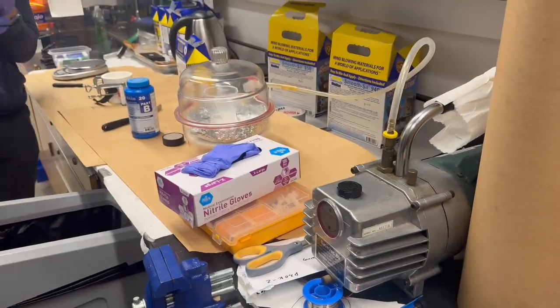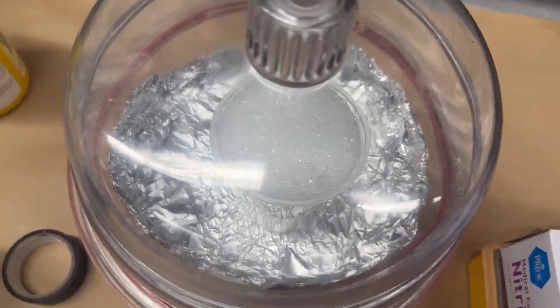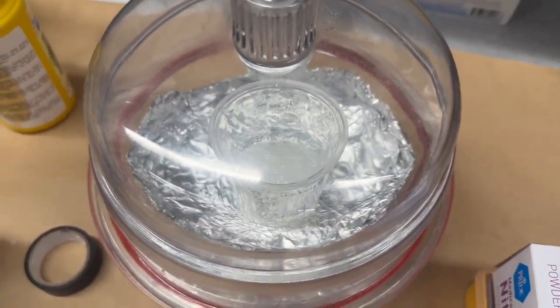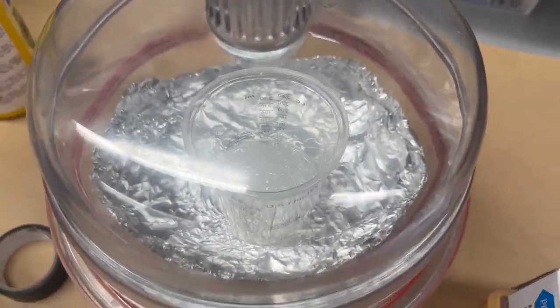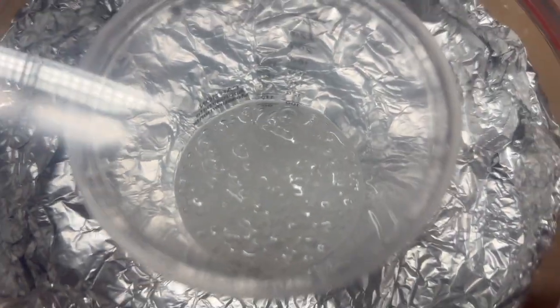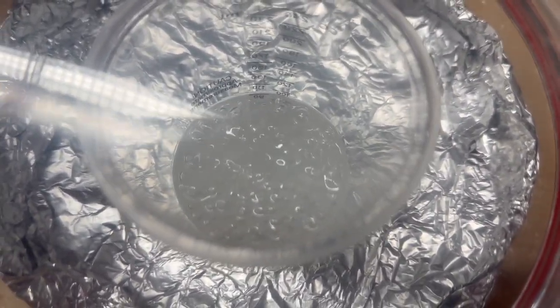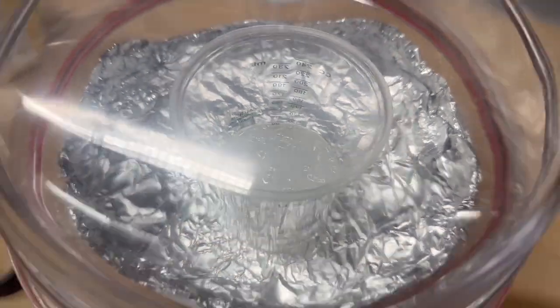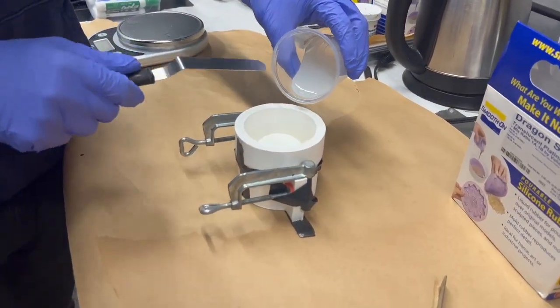After that, we put the silicone into a vacuum chamber to suck out all of the air that we introduced. And as you can see, it almost overflowed, which is why we had to do multiple batches. The cup was not big enough. We then left the silicone inside of the vacuum chamber just for a couple more minutes to let the air evacuate. We want to have as little air in the silicone as possible. We then turn off the vacuum and reintroduce air into the chamber.